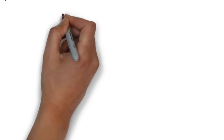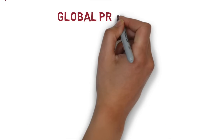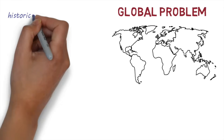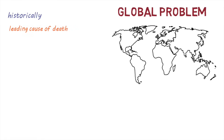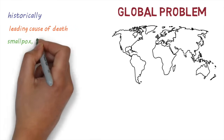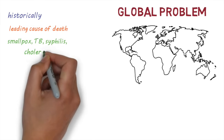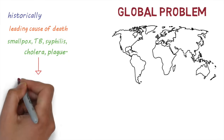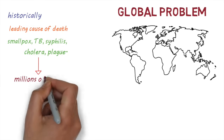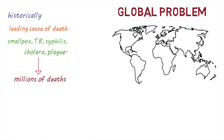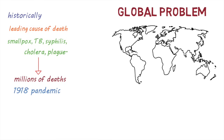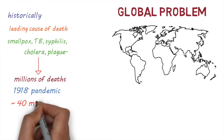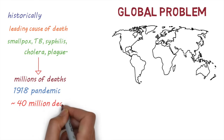Infectious diseases are a global problem and in the past used to be the leading cause of death. There were large epidemics of smallpox, TB, syphilis, cholera, and plague that caused millions of deaths around the world. The 1918 influenza pandemic alone was responsible for the death of around 40 million people globally.